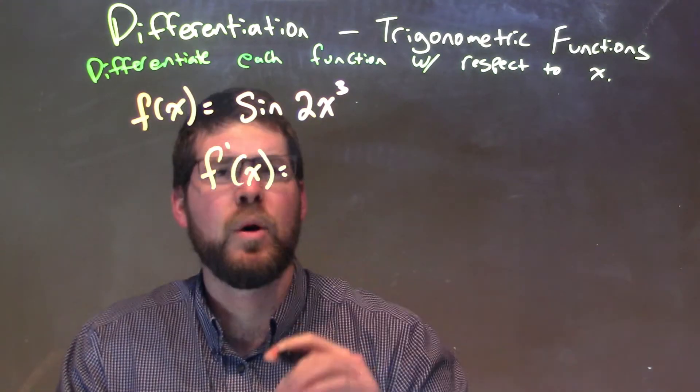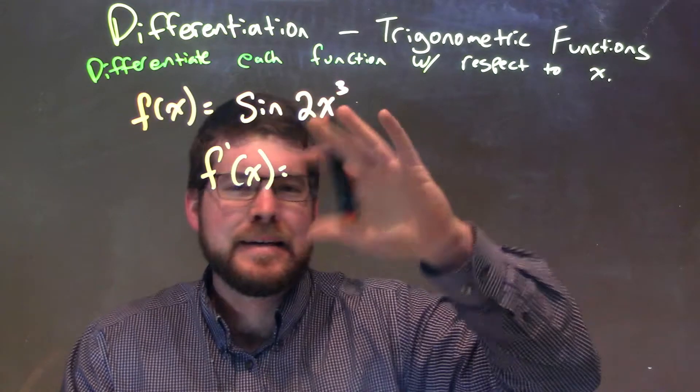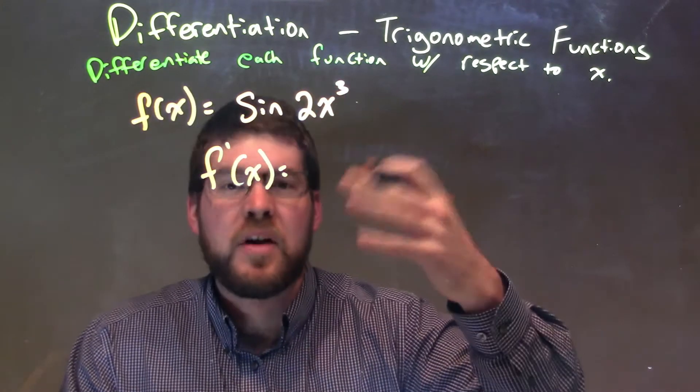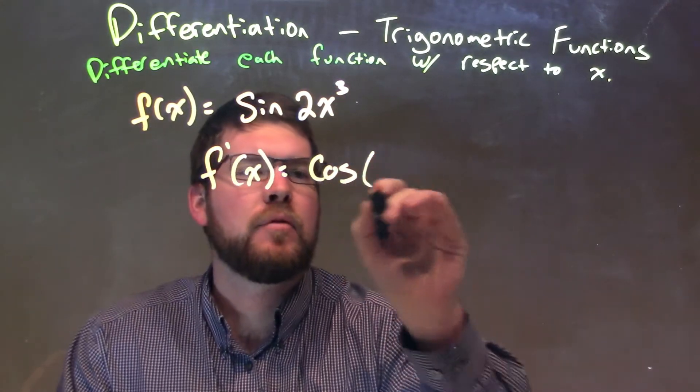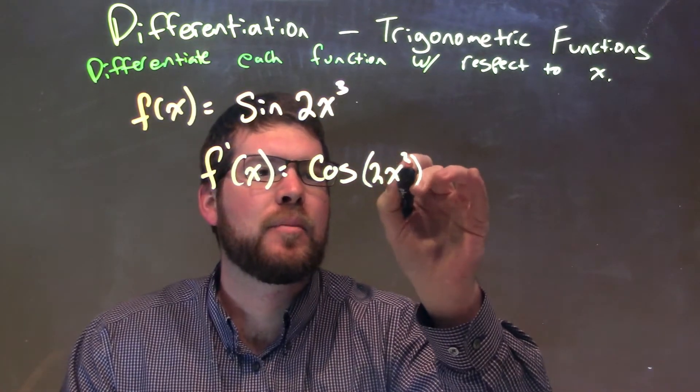Well, first thing we look at, we ignore that 2x to the third. We kind of imagine it's not there. Derivative of sine is cosine. So, I'm going to take the cosine of, and then I'm going to put whatever is on the inside there, 2x to the third power.